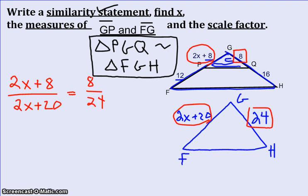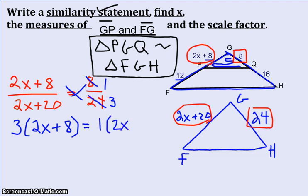And before I do that, I noticed the 8 over 24. Let's make those numbers a little smaller. This could reduce down. 8 goes into 8 once, 8 goes into 24 three times. This simply just makes our math a little bit easier. If you didn't notice to reduce it and you used 8 over 24, you would still get the right answer. So when we cross-multiply, we're going to do 3 times 2X plus 8, and we're going to do 1 times 2X plus 20.